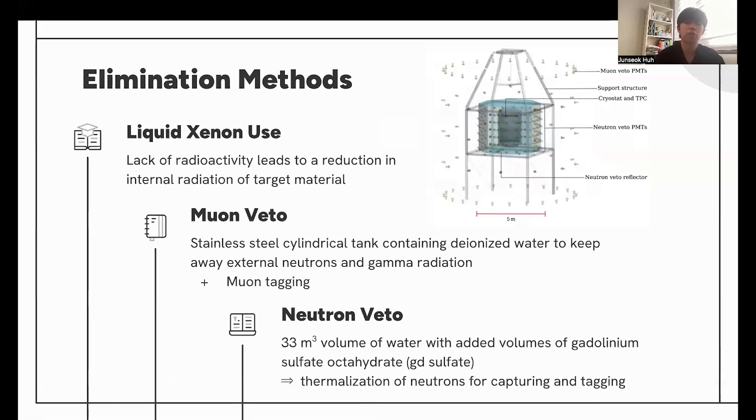To eliminate such background noise, there have been a lot of methods. First, just the pure use of liquid xenon, which is a non-radioactive element to reduce internal radiation of the target material. Muon veto, a stainless steel cylindrical tank containing deionized water to keep away external neutrons and gamma radiations. This also tags cosmic ray muon tracks in order to exclude them from the experimental data. The neutron veto system, a 33 cubic meter volume of water with added GD sulfate to thermalize neutrons and capture and tag them to exclude them from usable data.